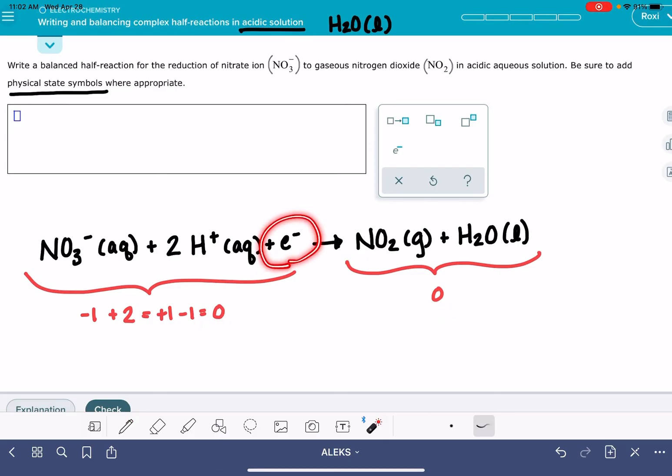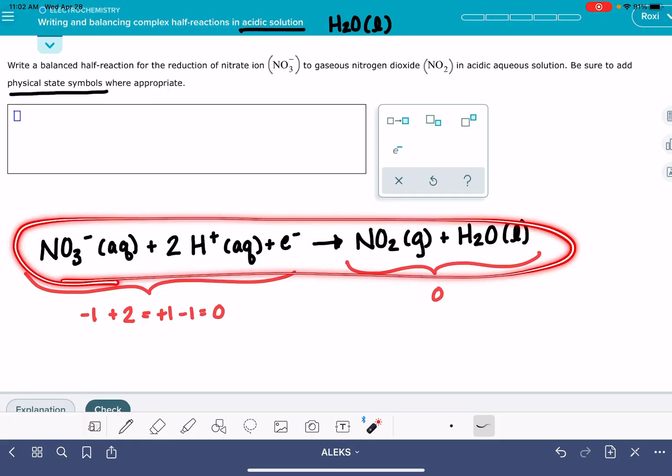Electrons do not get a physical state symbol. So that's why it's saying here where appropriate. It is not appropriate to call this aqueous or whatever, just nothing. So here is your balanced half reaction.